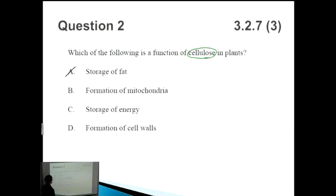How about B, the formation of mitochondria? No, once again, not that. C, the storage of energy. Well, carbohydrates are a form of energy and cellulose is made out of carbohydrates. However, in this case, cellulose is not a form of energy - that's usually starch in plants as well as glycogen in animals. So it's not C.